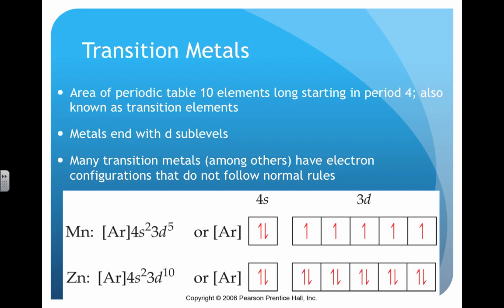Transition metals start in period four. These always end with d-sublevels. Just be aware that there are many transition metals that do not follow normal electron configuration rules.